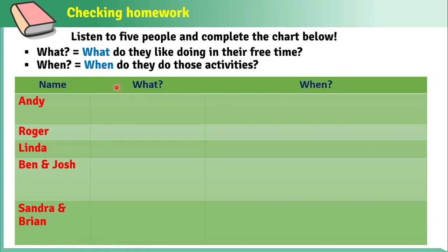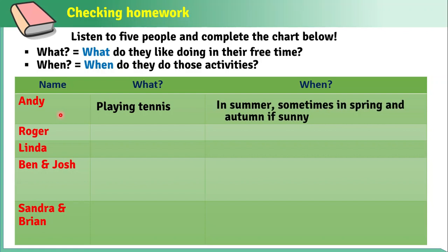Let me introduce you to what 'what' and 'when' mean. 'What' means you complete the information about the activity that the people are doing. 'When' refers to the time — when they do those activities. For example, Andy likes playing tennis in his free time. He plays in summer but sometimes in spring and autumn if it is sunny.